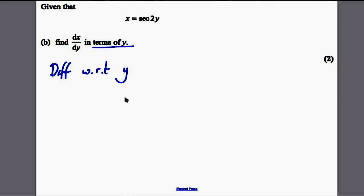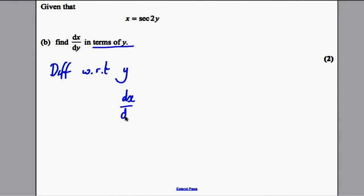Part B. You are given that x equals sec 2y. Find dx by dy in terms of y. So we're differentiating with respect to y. So dx by dy. Let's differentiate this here. Now, it's sec of 2y.